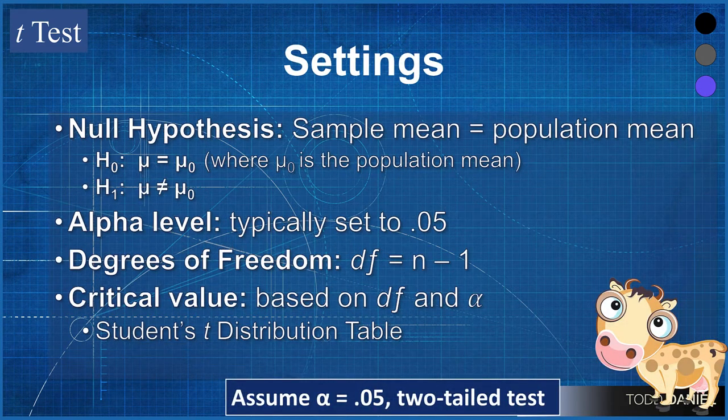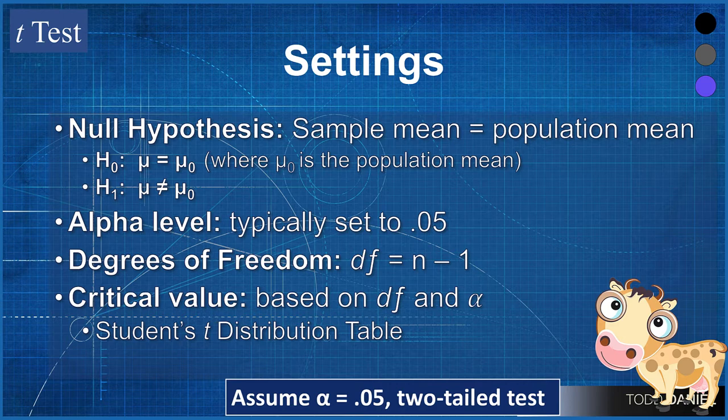Given that the assumptions are correct, then we can look at our settings of what we will use so that we can work through the remaining steps of hypothesis testing. With a one sample t-test, the null hypothesis will be that the sample mean is the same as the population mean, and it should be. The sample value should be the same as the population from which it was drawn. We would write our null hypothesis as h sub zero, colon, mu equals mu sub zero, and we will actually substitute a number, which is the population mean where it says mu sub zero.